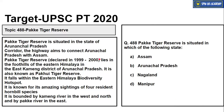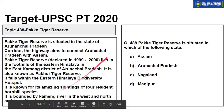In our segment 'Target UPSC 2020,' we will cover topics 488 to 490. Topic 488 is about Pakke Tiger Reserve, situated in the state of Arunachal Pradesh. The highway aims to connect Arunachal Pradesh with Assam. Pakke Tiger Reserve, declared in 1999, lies in the foothills of the Eastern Himalayas in East Kameng district of Arunachal Pradesh. It is also known as Pakhui Tiger Reserve, falls within the Eastern Himalaya biodiversity hotspot, and is known for amazing sightings of four resident hornbill species. It is bounded by the Kameng river in the west and north.